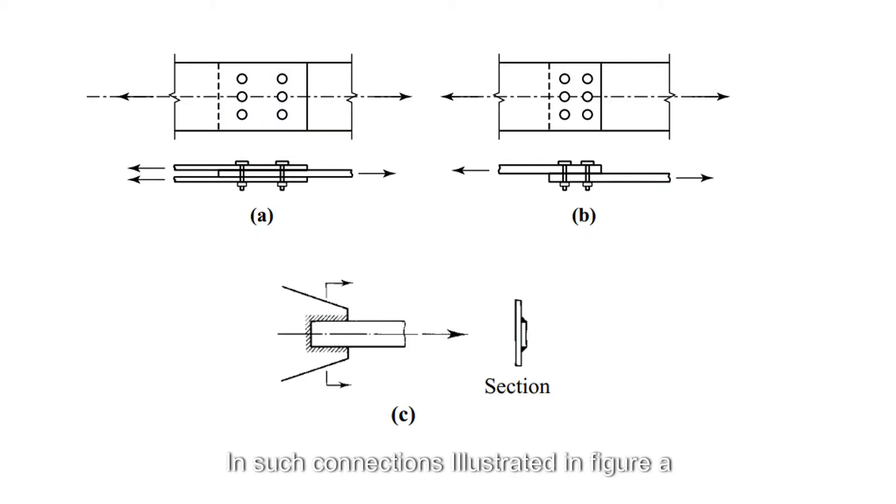In such connections illustrated in figures A, B, and C, each fastener or each unit length of weld will resist an equal amount of force. The load capacity of the connection can then be found by multiplying the capacity of each fastener or inch of weld by the total number of fasteners or the total length of weld.